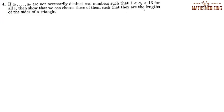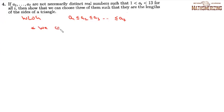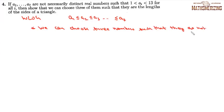Question 4: If a₁, a₂, ..., a₇ are not necessarily distinct real numbers with each aᵢ between 1 and 13, show that we can choose 3 of them that are the lengths of the sides of a triangle. Without loss of generality, assume a₁ ≤ a₂ ≤ ... ≤ a₇. We prove by contradiction, assuming no three form a triangle.